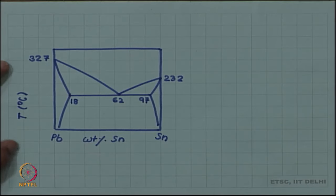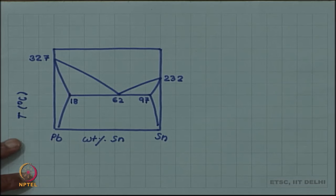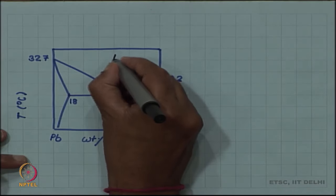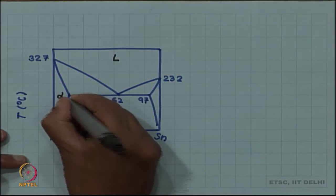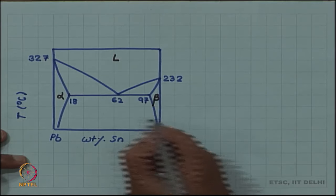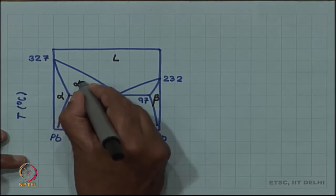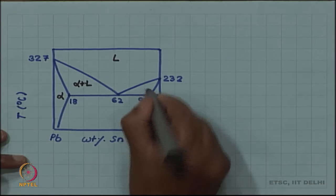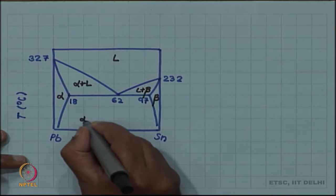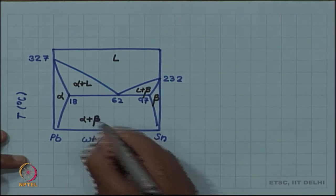Recall that we discussed as an example of eutectic phase diagram, a lead-tin phase diagram which is shown here. You have a liquid phase, you have two solid phases, two different solid phases alpha and beta. And then by the one to one rule you have these regions: alpha plus liquid, liquid plus beta, and alpha plus beta.